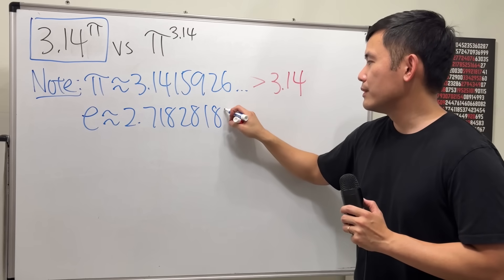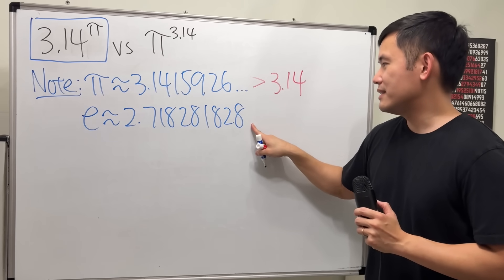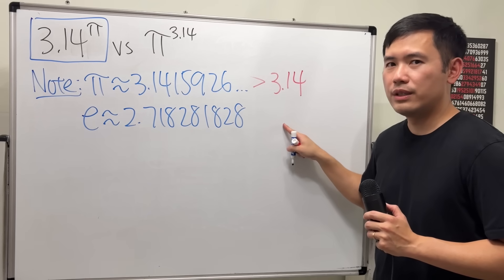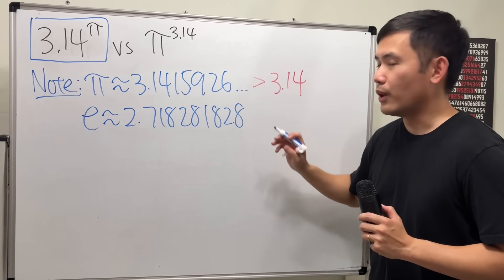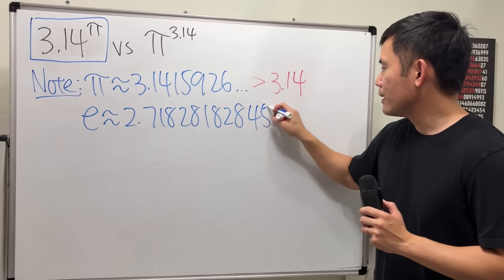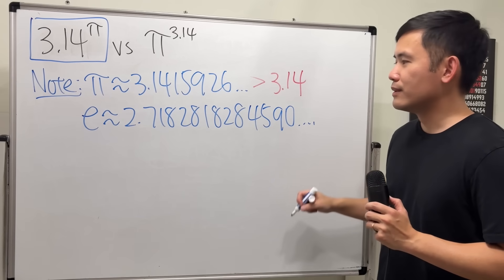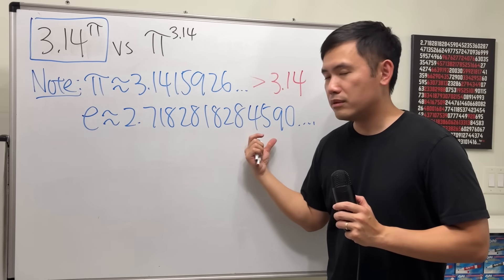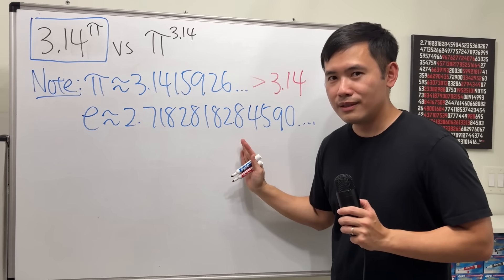1.828. And maybe you are thinking 1.828, 1.828. No, it's 4, 5, 9, 0, and so on. There's no pattern. It does not repeat. This is irrational.